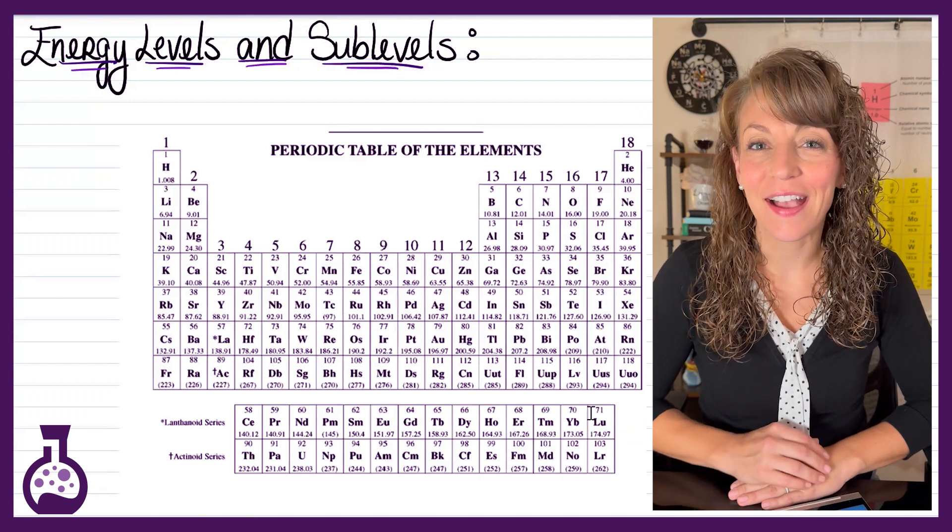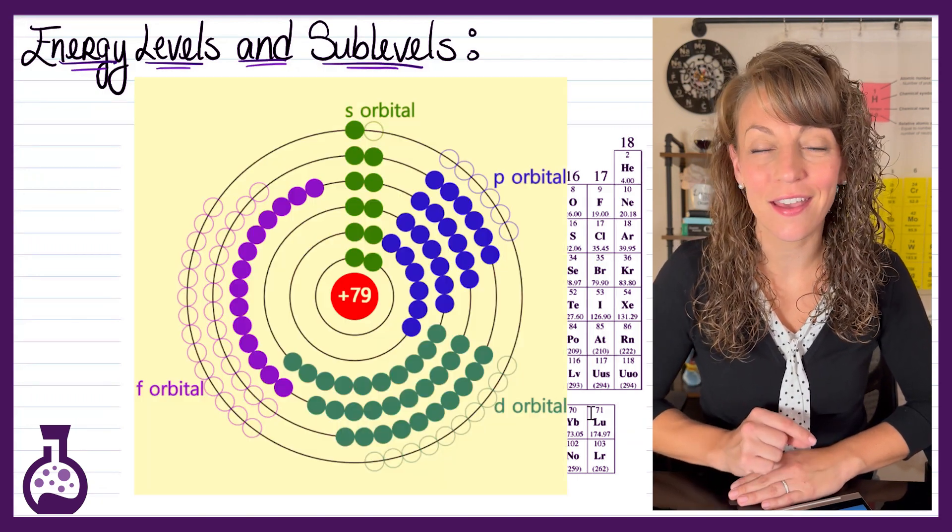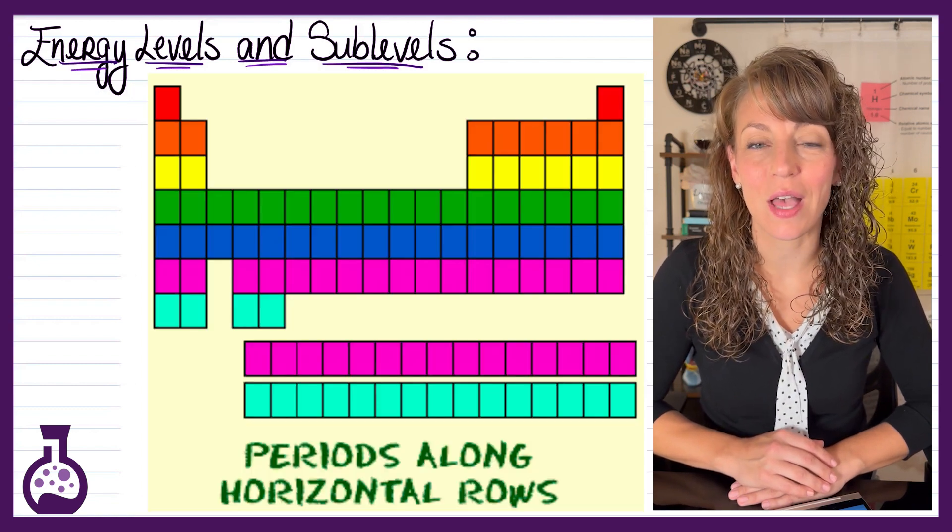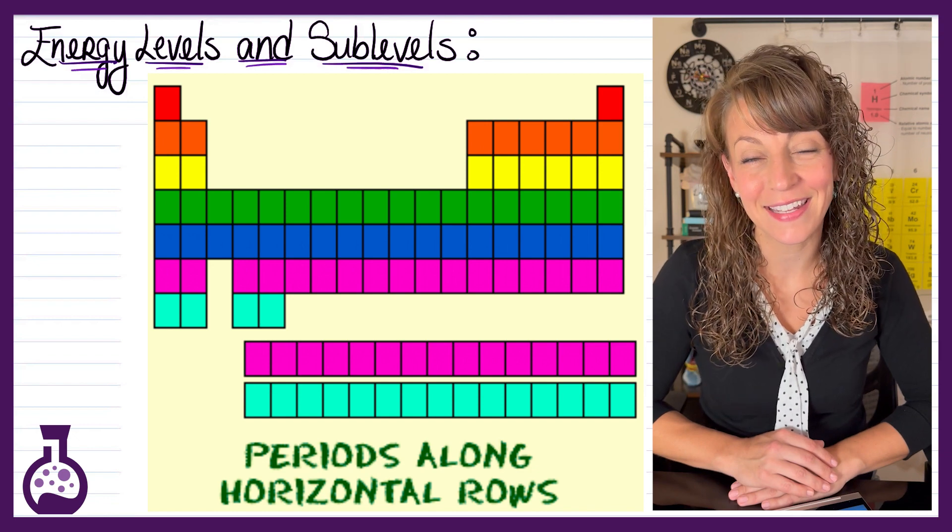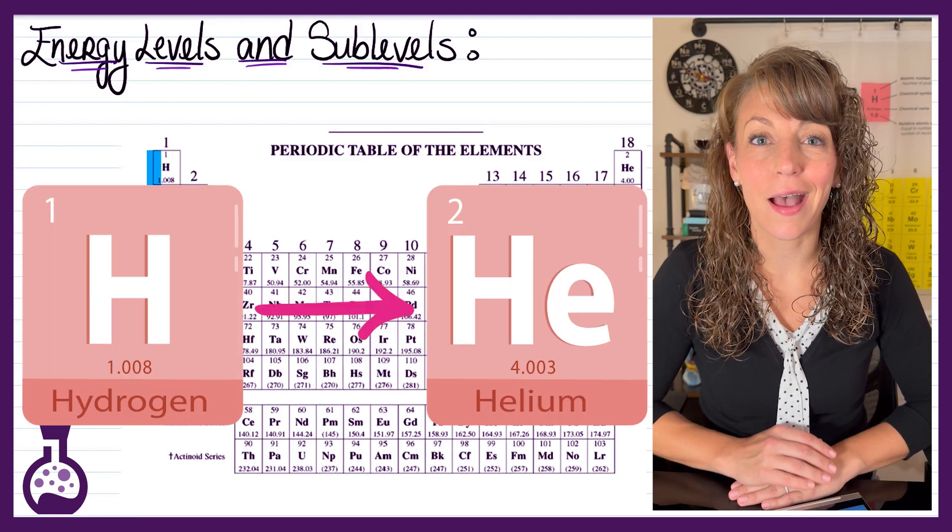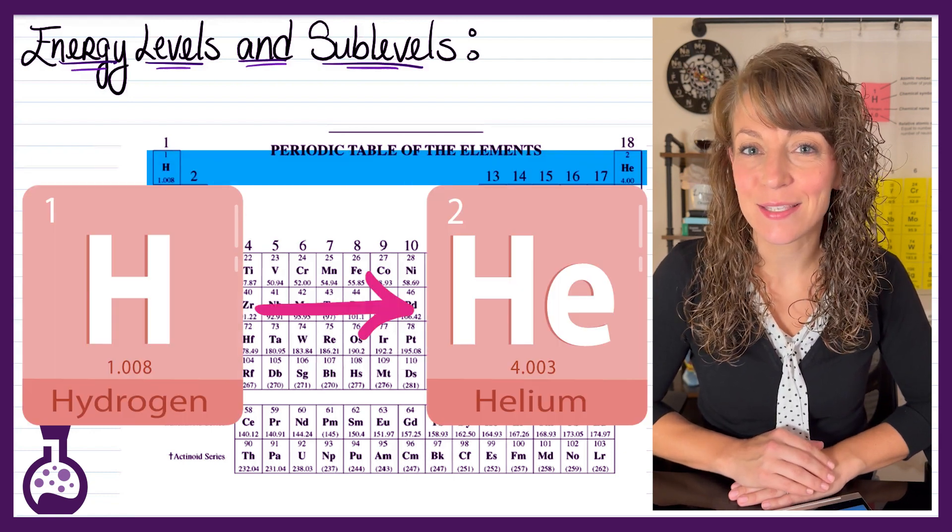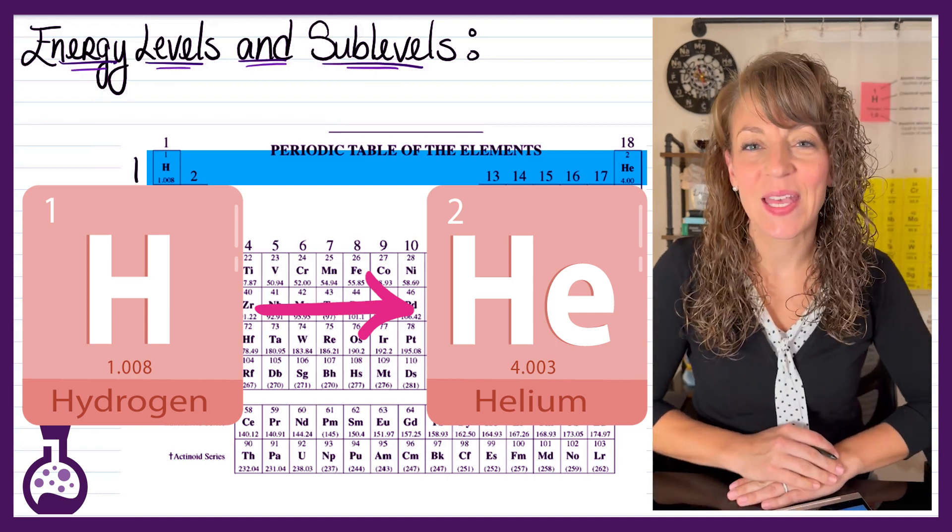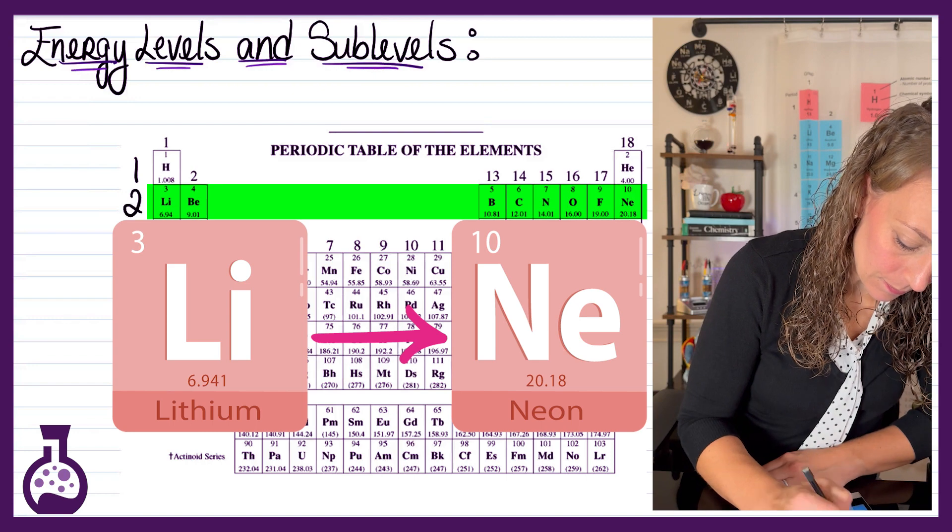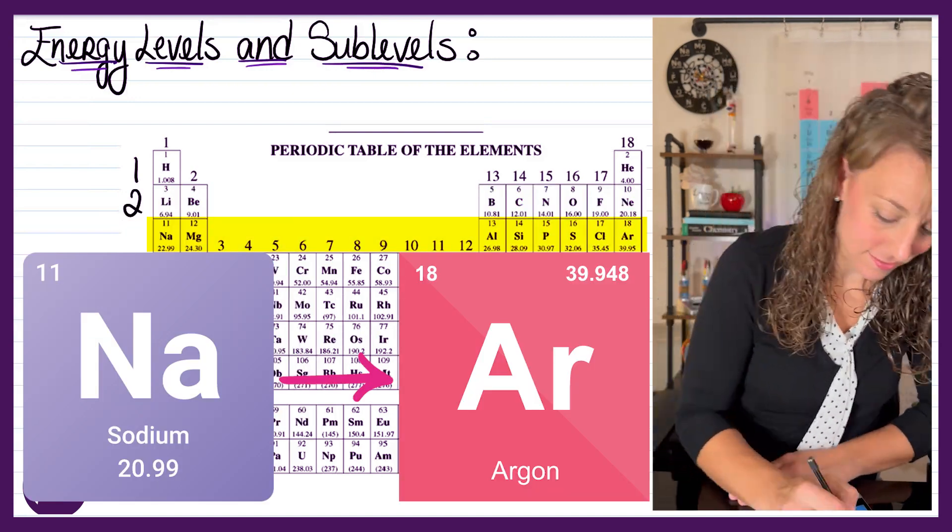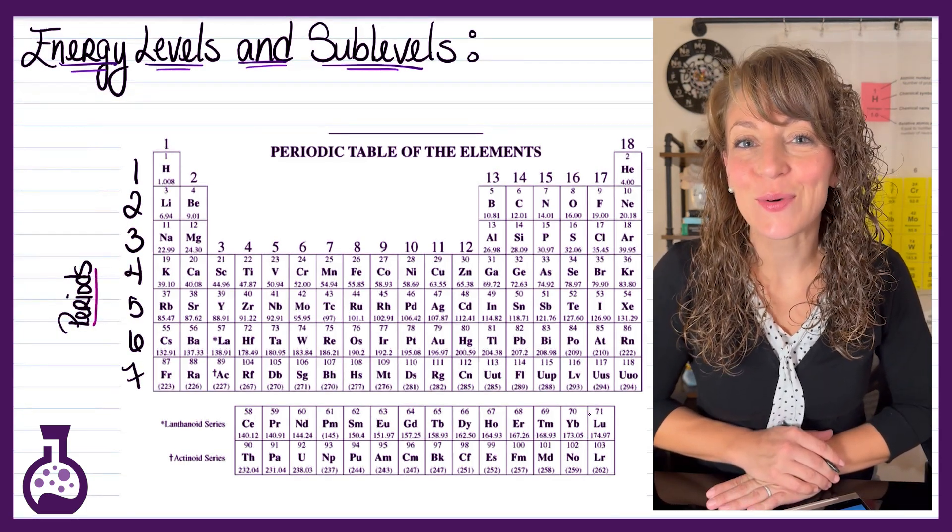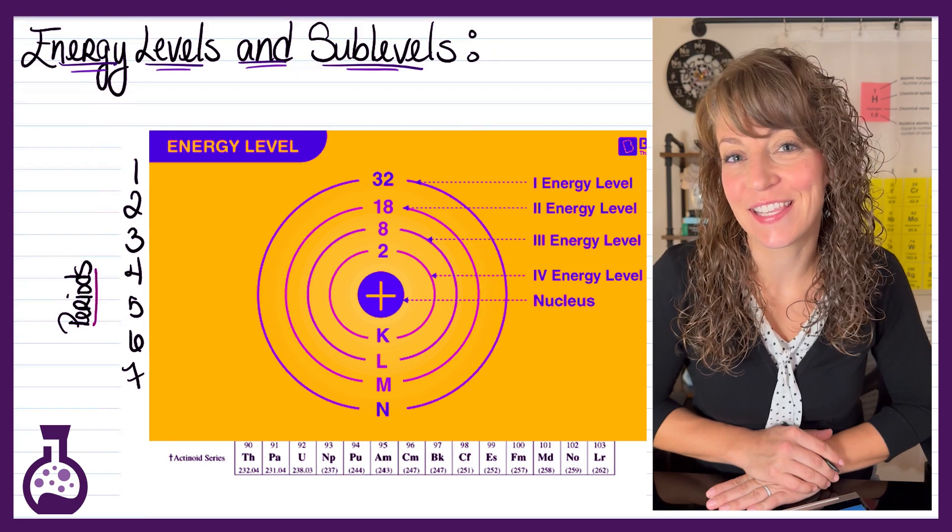However, the periodic table can be used to determine both the energy level and the sublevel. First and foremost, the rows on the periodic table that run from left to right, they're referred to as a period. So the row running from hydrogen to helium, that's period number one. The row running from lithium to neon, that's period number two. Sodium to argon, period number three, and so on and so forth. Now the period number will correspond to the energy level for the electron.